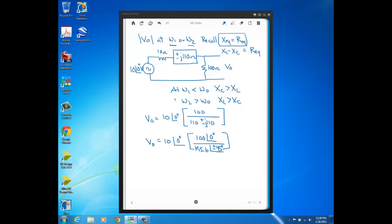But since we're interested in magnitude, the magnitude of Vout, well that's why I don't really care about the sign here. In fact, I don't care about the angle. So the magnitude is just going to be 1000, because 10 times 100 divided by 155.6, and that comes out to 6.43 volts.